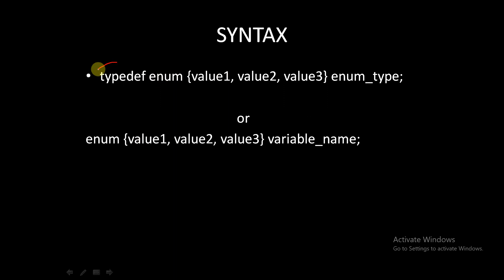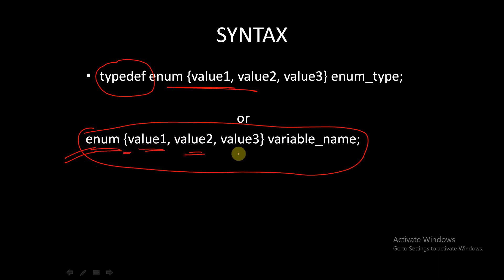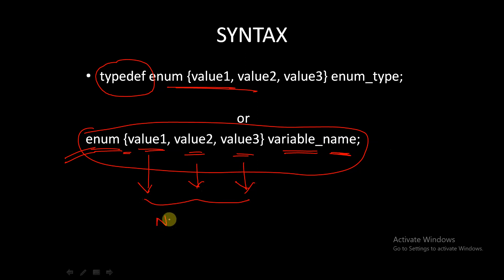The syntax for enum: you can use typedef with enum, or just use enum alone. The syntax is 'enum' followed by curly braces containing 'value1, value2, value3', followed by a variable name. The values inside the curly braces should be named constants only.